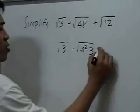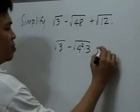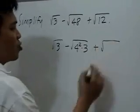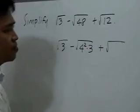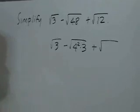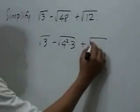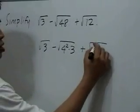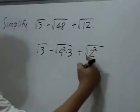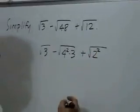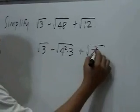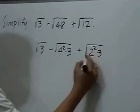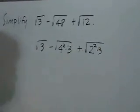We will do the same with square root of 12. And square root of 12 can be written as 2 squared, or 4 times 3, under the square root.